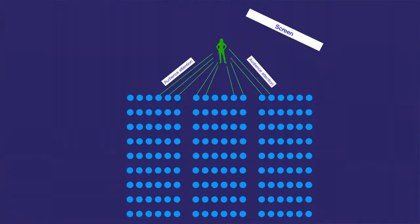A better version is this one. We've got only three colors here. We've got the speaker in green, the sight line of the audience in green, the audience represented in light blue, and the screen itself, which is white. That's all you need.